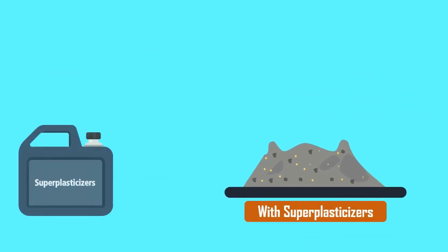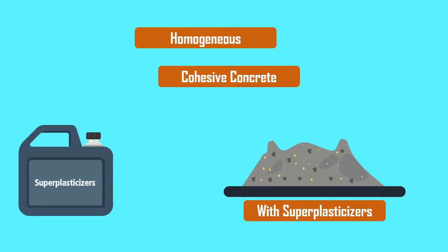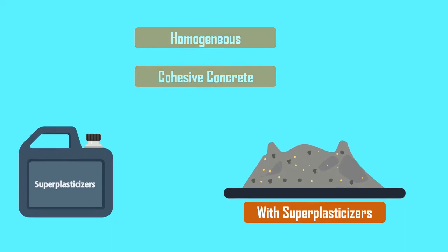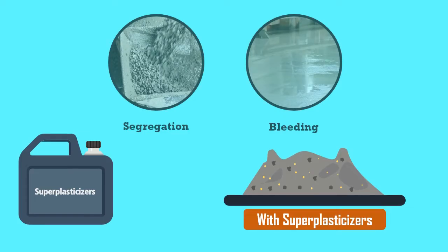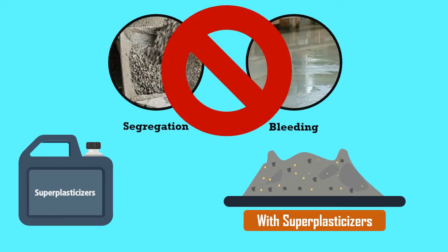Superplasticizers also produce a homogeneous, cohesive concrete generally without any tendency for segregation and bleeding.